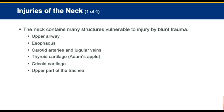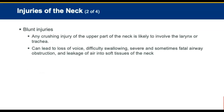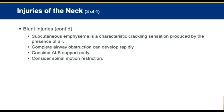The neck contains many structures and is very vulnerable to injury from blunt trauma. Any crushing injury of the upper part of the neck is likely to involve the larynx or trachea. Signs and symptoms of fractures of the upper airway and laryngeal cartilage include loss of voice, difficulty swallowing, severe and sometimes fatal airway obstruction, and leakage of air into soft tissues of the neck — called subcutaneous emphysema. Management includes maintaining the airway and immediately transporting. Consider advanced life support early and also consider spinal motion restriction.